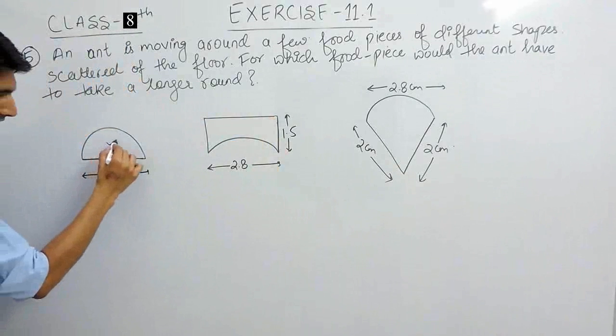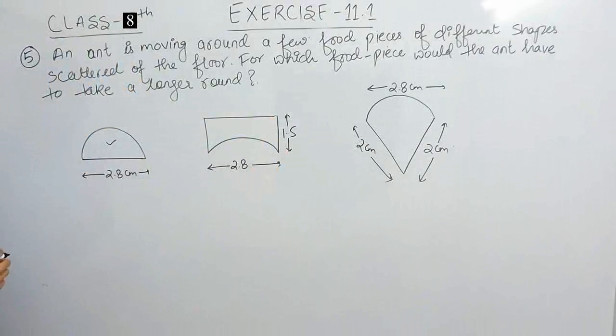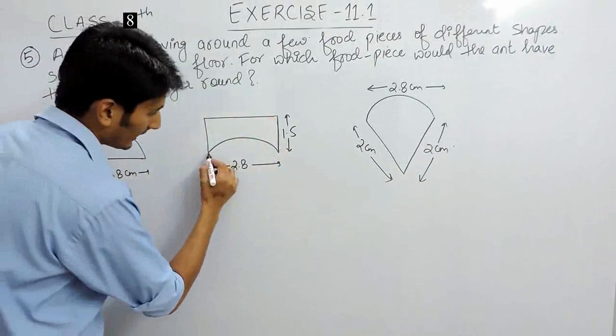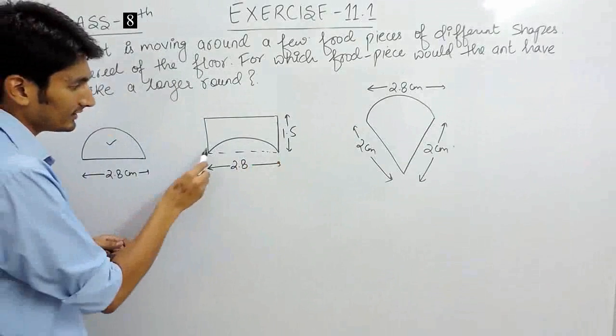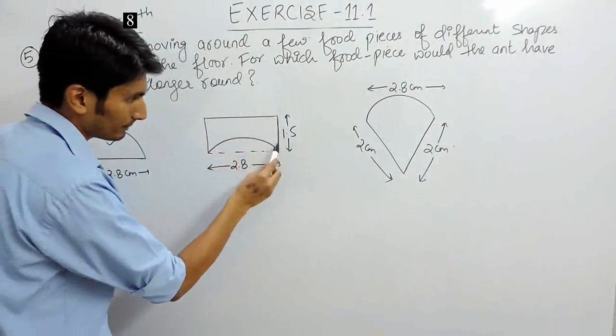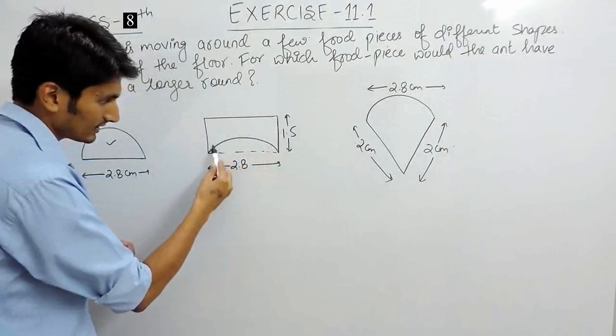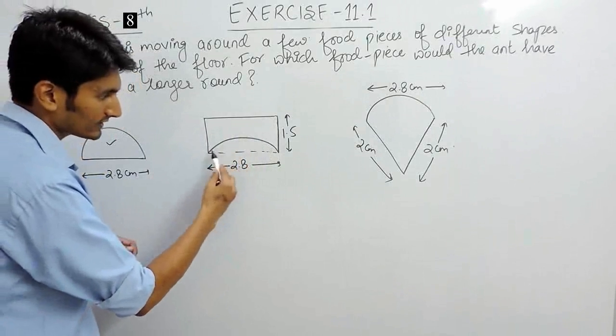First of all, you have to find the perimeter of this semicircle. After that, you have to find this length plus this length plus this length and this circumference, or you can say this